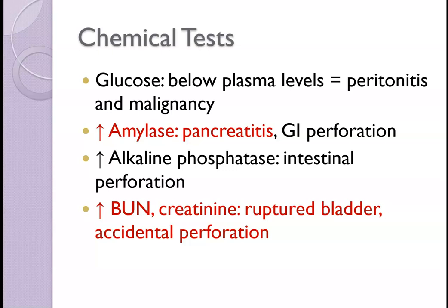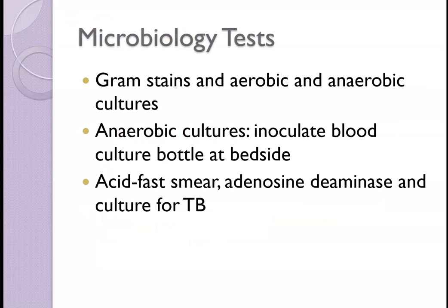Alkaline phosphatase elevation helps indicate a perforation. BUN and creatinine in peritoneal fluid could be coming from urine, suggesting a perforated or ruptured bladder. For microbiology, look for TB if indicated, and perform aerobic and anaerobic cultures as well as Gram stains from the cytocentrifuge.